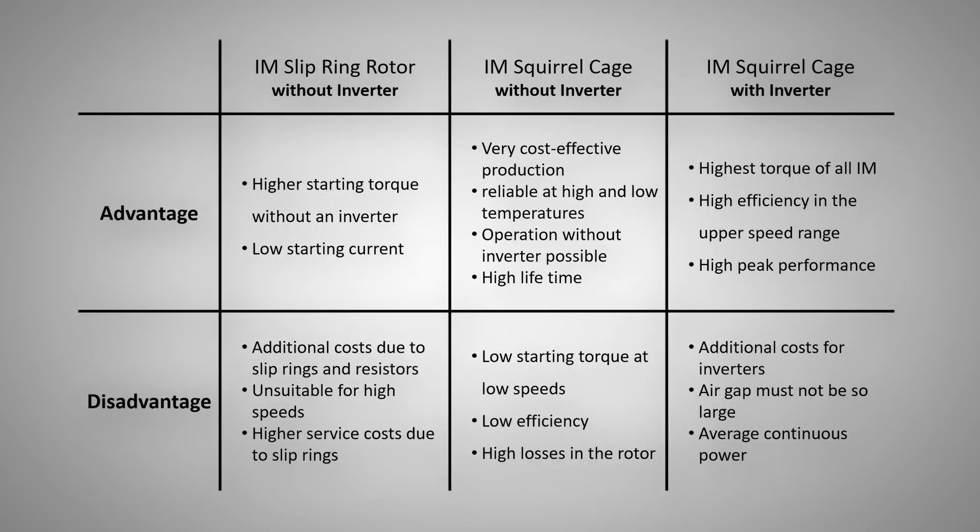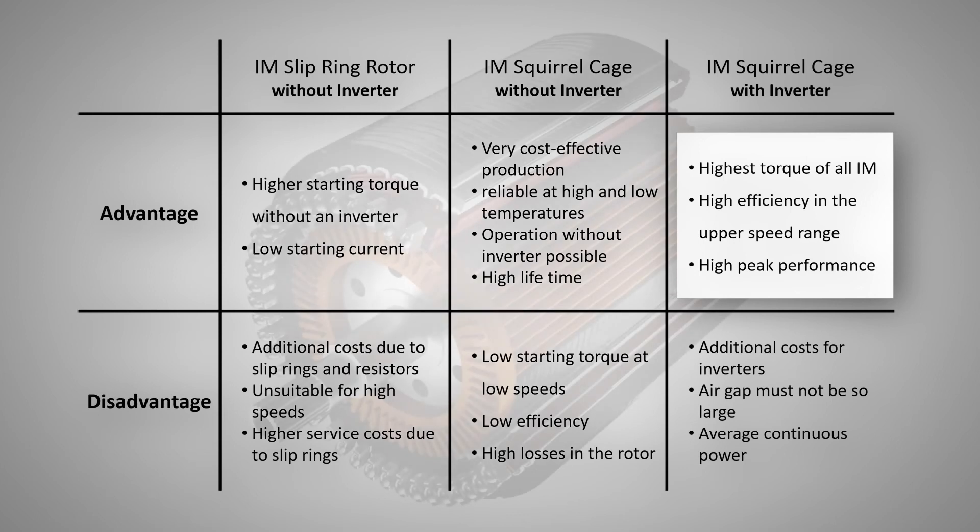With an inverter, the induction motor can achieve similar high efficiencies at high speeds as the PMSM. Peak power and peak torque are also very good because you do not have to worry about demagnetization of the magnets. The continuous power can be a problem if the generated heat in the rotor cannot be removed properly.